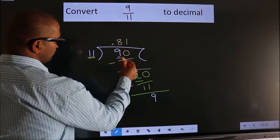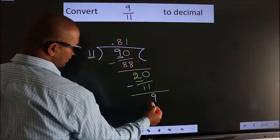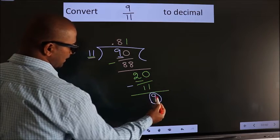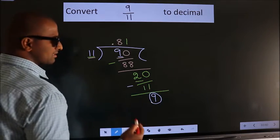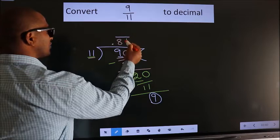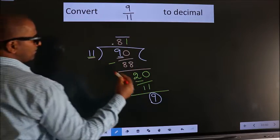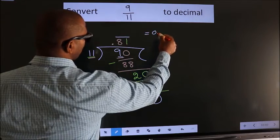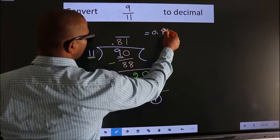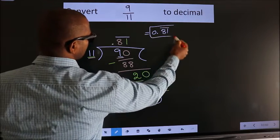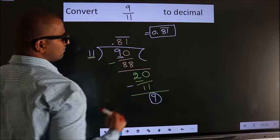Remember, earlier we had 9, we got 9 again. That means we get bar on these two numbers. Therefore, our answer is 0.81 bar on these two numbers. This is our answer.